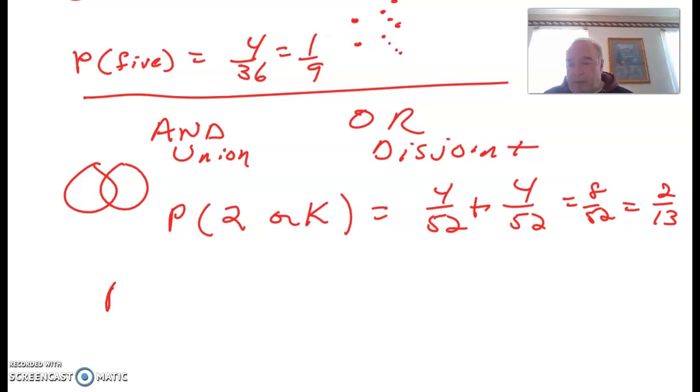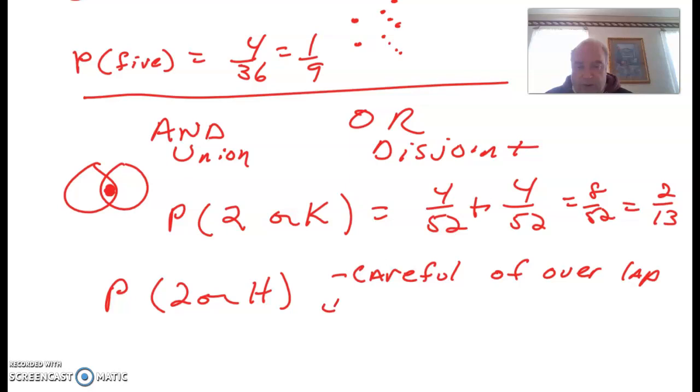Okay. The probability of getting a 2 or a heart. Now, these are not mutually exclusive, because there is a 2 of heart. So, we have to be careful. Be careful of the overlap. That would be like in here. We got the overlap. So, we have to account for that. So, first of all, we're going to take the probability of a 2, which would be 4 out of 52, plus the probability of getting a heart, which is 13 out of 52. But one of these 13 is also a 2, which we have accounted for in the first one.